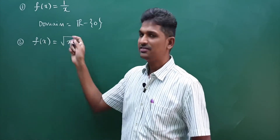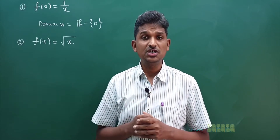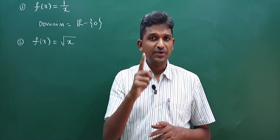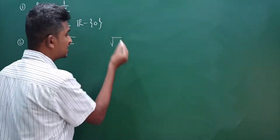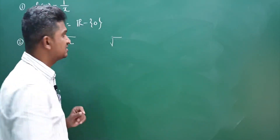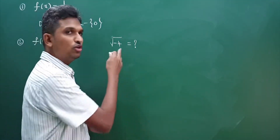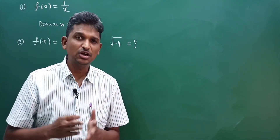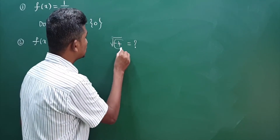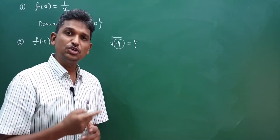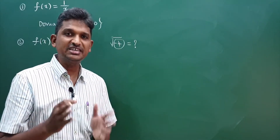Observe the second problem: f of x equal to root x. What is domain of this function? For what values of x is the function defined? In real system — everything I am discussing today is in the real system only — what is root over minus 4? In real system, it is not defined. In complex system it is 2i, but that is another case. Whatever is under the root, that must be positive. Root 0 is 0, so whatever expression is under the root, it must be greater than or equal to 0.